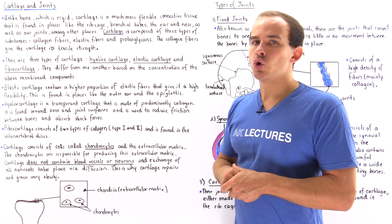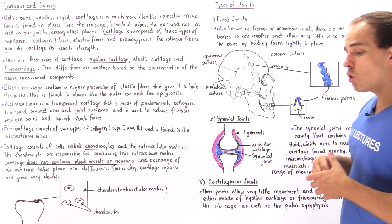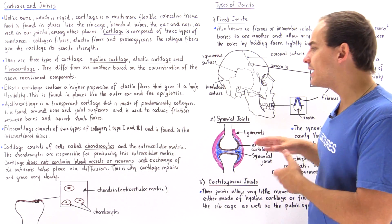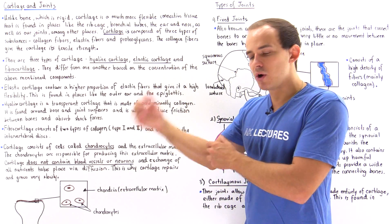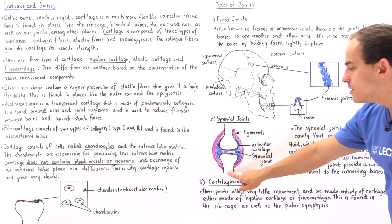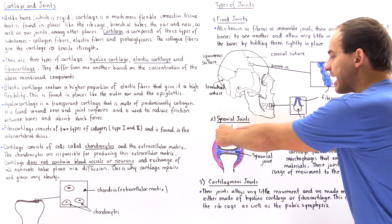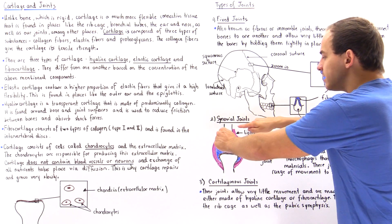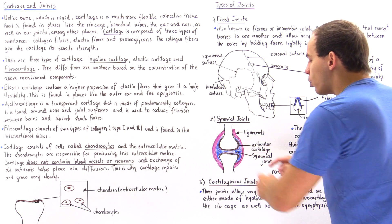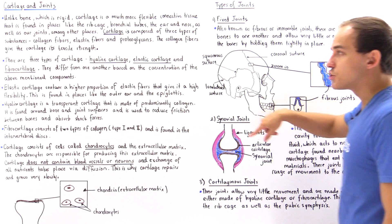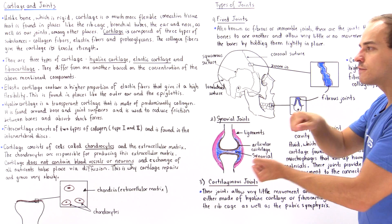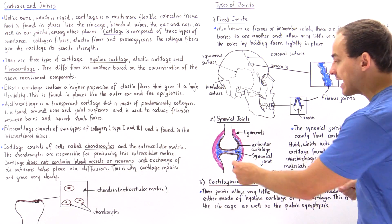The second type of joint is the synovial joint, which creates a very wide range of movement. These joints are found in our elbows and knees. The synovial joint consists of ligaments that connect bone to bone, and articular cartilage — the hyaline cartilage we discussed — shown in brown, which reduces friction and absorbs shock.